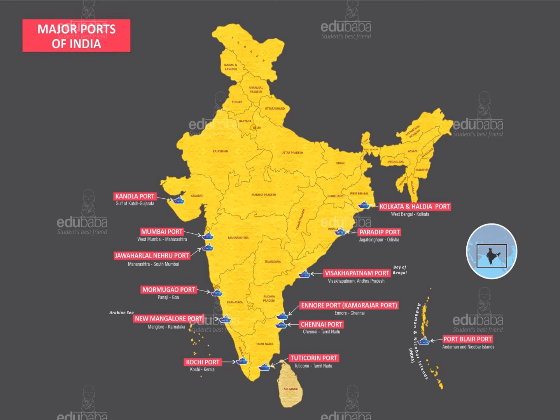The port situated in West Mumbai, Maharashtra is Mumbai port. The third port is situated in South Mumbai, Maharashtra — Jawaharlal Nehru port. Next is Panjim, Goa — Marmagao port. Then in Karnataka, in the city of Mangalore, we have the New Mangalore port. Next in Kerala, in the city known as Kochi, we have the Kochi port.